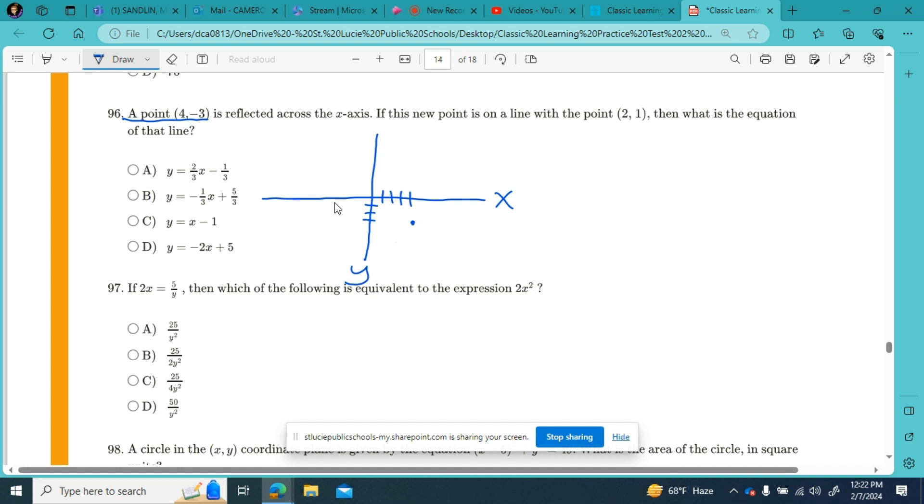And now this point is reflected across the y-axis. So we're taking our coordinate plane and we're folding it over. So this point moves from down here to an equal distance up here. So that's up 1, 2, 3. And continuing with the question, I'm going to erase my original point and only look at the point after it moved. If this new point is on a line with the point (2, 1), so right by 2, up by 1,